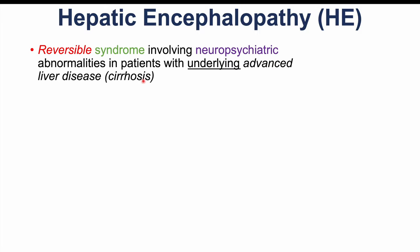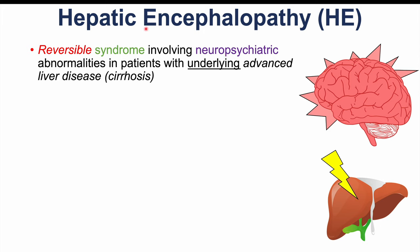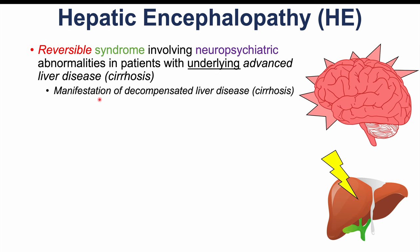Hepatic encephalopathy is a reversible syndrome involving neuropsychiatric abnormalities in patients with underlying advanced liver disease or cirrhosis. It is an important manifestation of decompensated liver disease, and it can occur in liver disease from any etiology — from any cause.